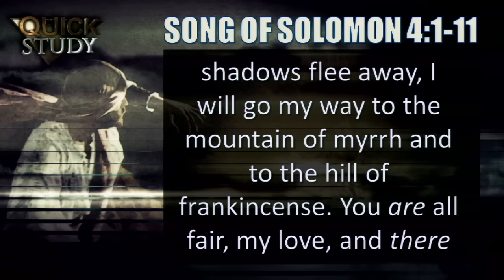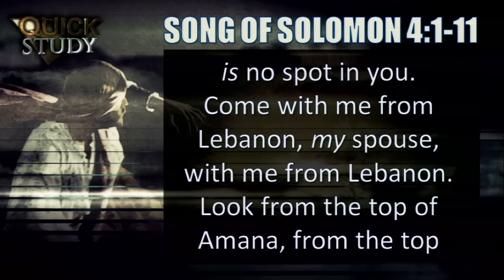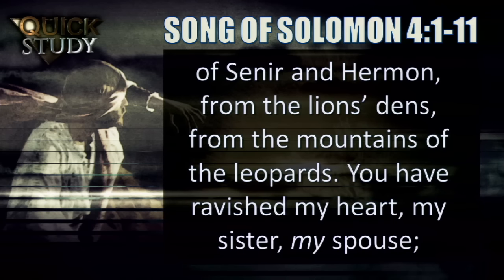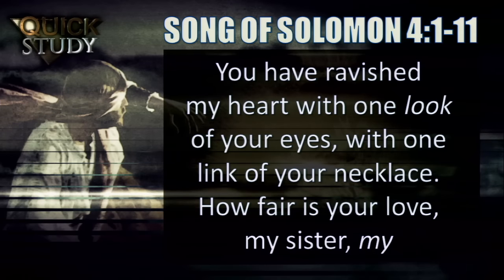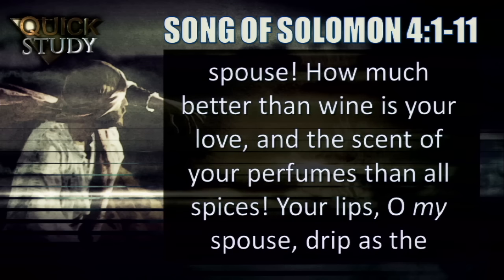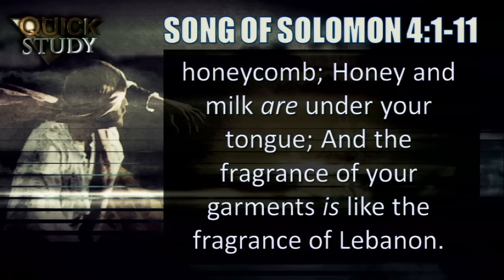'Until the day breaks and the shadows flee away, I will go my way to the mountain of Myrrh and to the hill of Frankincense. You are all fair, my love, and there is no spot in you. Come with me from Lebanon, my spouse; look from the top of Amana, from the top of Sinir and Hermon, from the lions' dens, from the mountains of the leopards. You have ravished my heart, my sister, my spouse, with one look of your eyes and one link of your necklace. How much better than wine is your love, and the scent of your perfumes than all spices! Your lips drip as the honeycomb; honey and milk are under your tongue, and the fragrance of your garments is like the fragrance of Lebanon.' — Song of Solomon, chapter 4, verses 1 through 11.